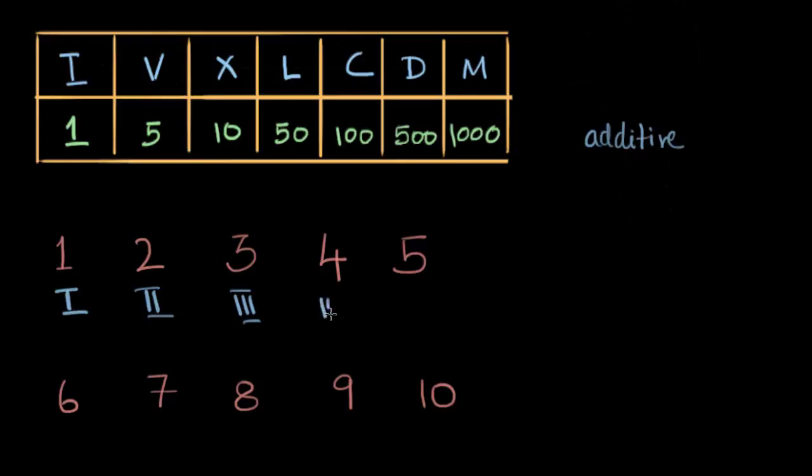Four is going to be IIII. Not really. So four is a little, so it seems right to do this, right? Three I's for three, four I's for four. But then it turns out that this is not how we do it, at least not anymore. So I'm going to put four as controversial. We're going to talk about four more.